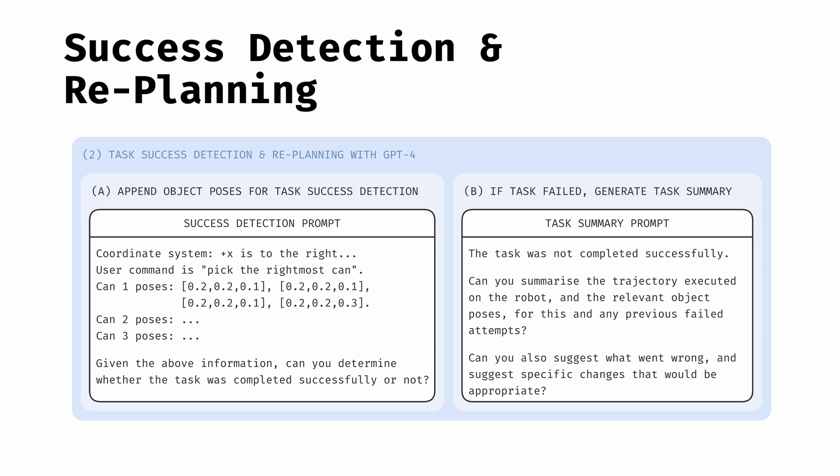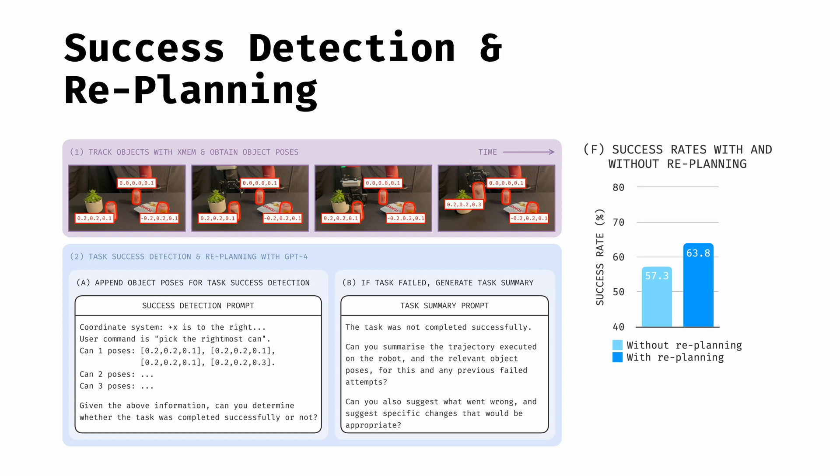This information can then be provided to another instance of the LLM, to guide it to re-plan and generate the correct trajectory. Our experiments demonstrate that LLMs can indeed interpret the numerical trajectories of objects, to detect successful and unsuccessful episodes autonomously, and initiate re-planning to rectify any failures.